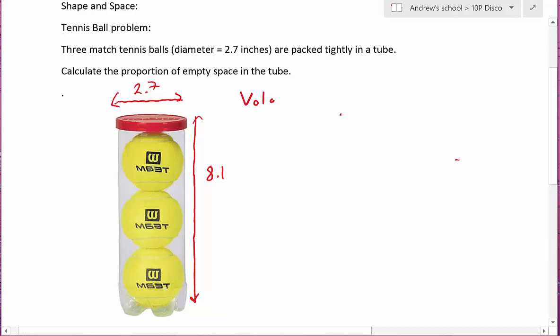The volume of the tube is given by pi r squared h. r is the radius which is half of 2.7 which is 1.35 squared, and then h is 8.1. This gives us a total volume of 46.377 inches cubed.